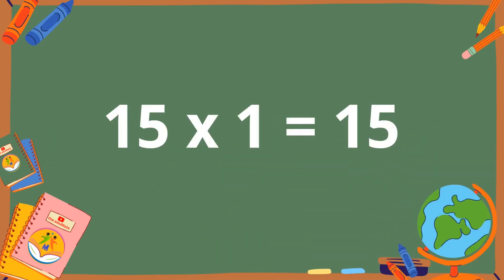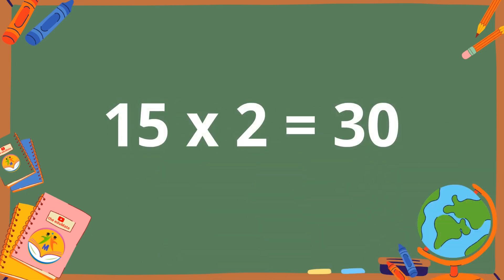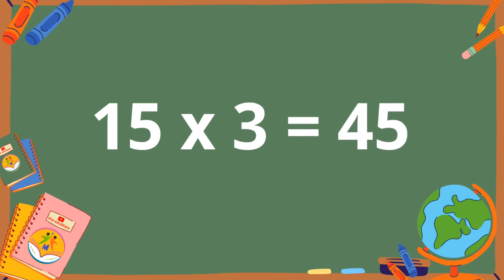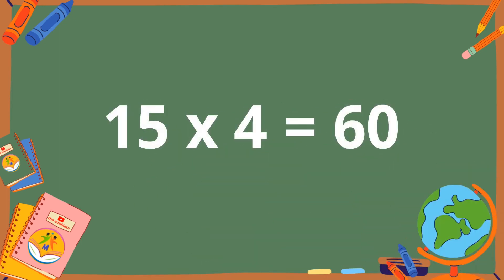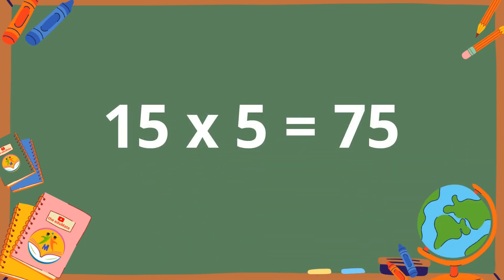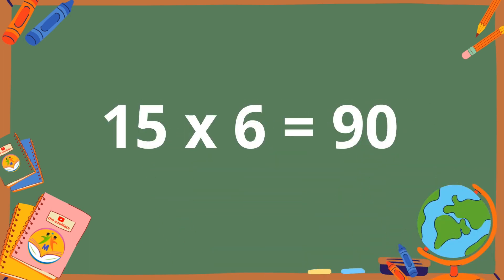Table of 15. 15 ones are 15. 15 twos are 30. 15 threes are 45. 15 fours are 60. 15 fives are 75. 15 sixes are 90.